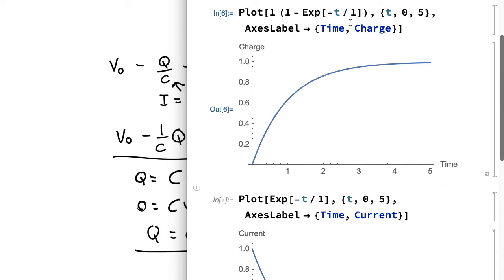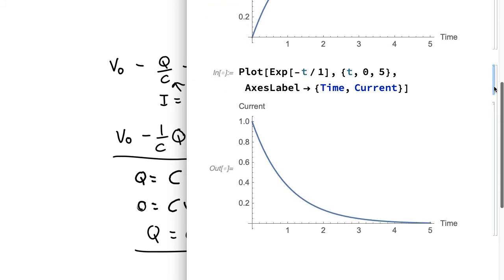If you want to look at the current, we can differentiate this. And so here's a graph of the current versus time. It starts off large and then drops down, asymptotes towards zero but never quite gets there.